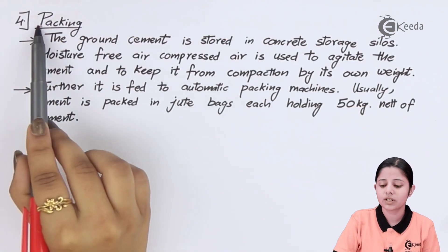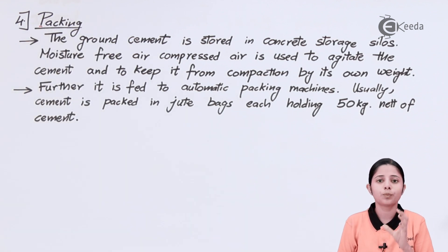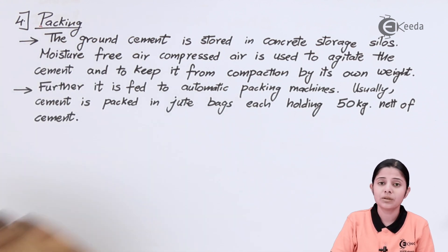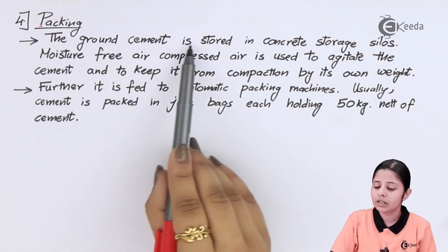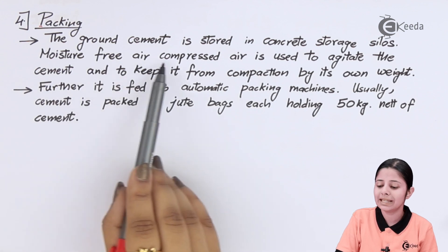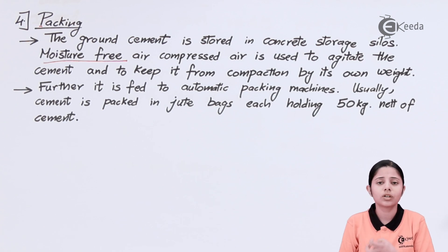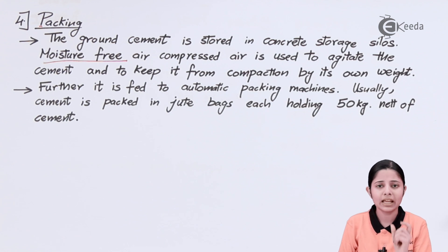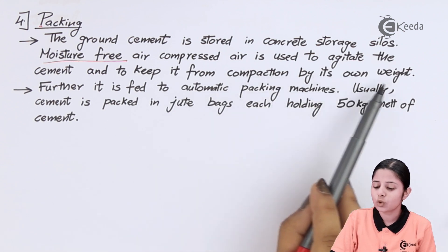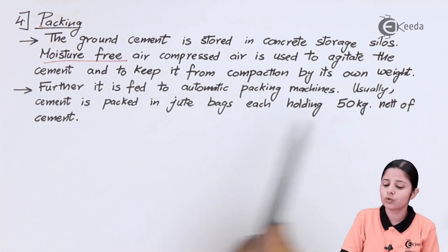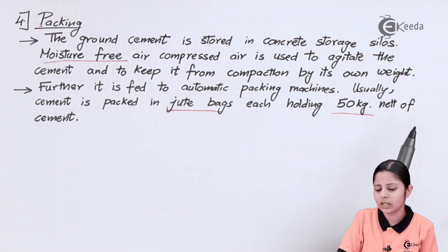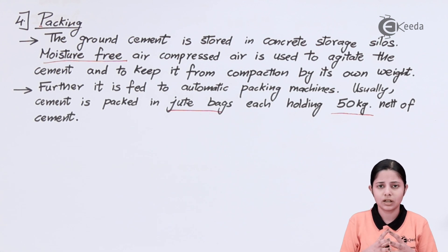The last process is packing. Once the cement is made, it must be packed properly or it will decompose due to atmospheric gases and moisture, making packing one of the most important steps. The ground cement is stored in concrete storage silos using moisture-free compressed air — moisture-free because we removed all water content at 400°C and do not want atmospheric moisture to re-enter. Finally, cement is fed to automatic packing machines and packed in jute bags, each holding approximately 50 kg.